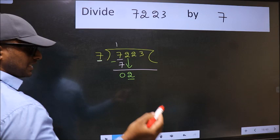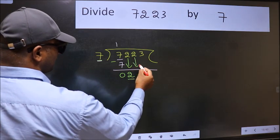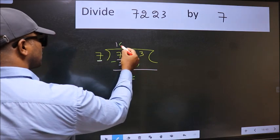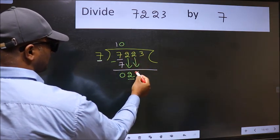So we should bring down the second number. And the rule to bring down second number is put 0 here. Then only we can bring this number down.